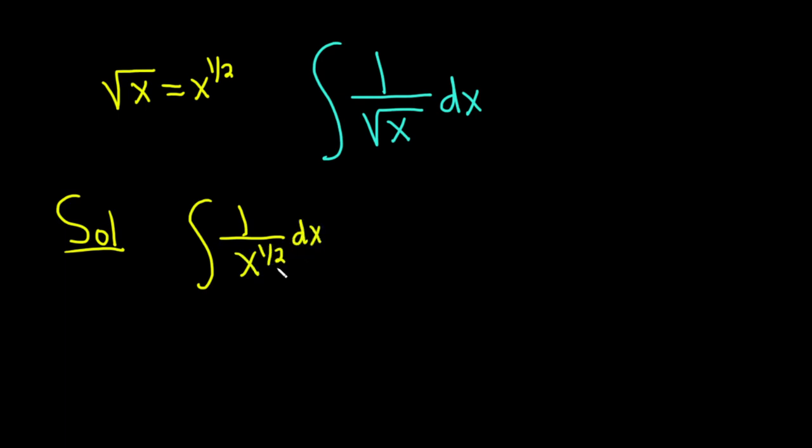And now we want it to be x to a power, so we're not quite there yet because we have 1 over x to a power. So what we'll do is bring it upstairs, and when you do that, it becomes x to the negative 1/2, and then here we have the dx.